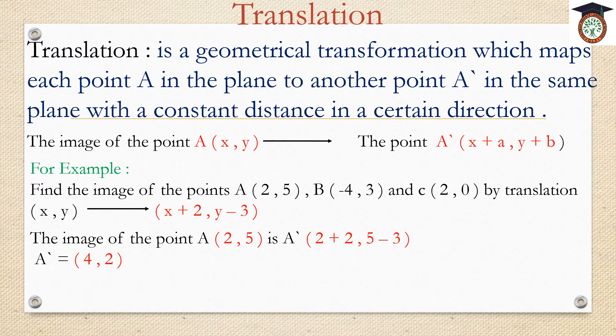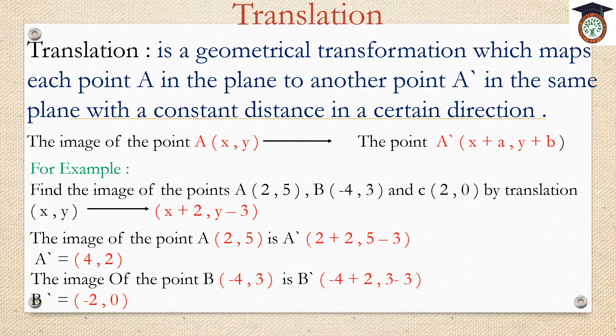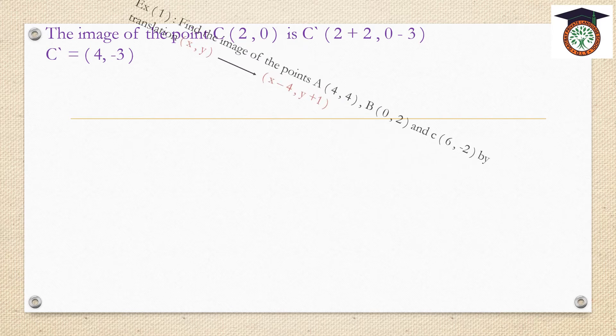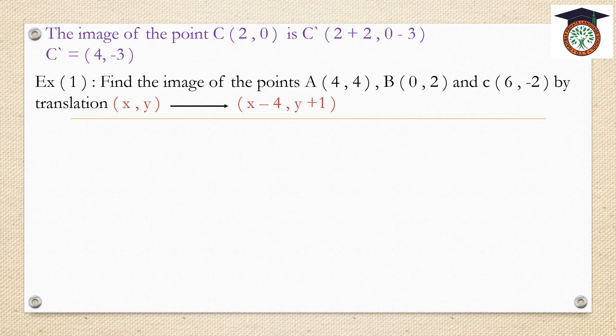A dash equals (4, 2). The image of point B is B dash: -4 plus 2 and 3 minus 3, which is (-2, 0). The image of point C(2, 0) is C dash: 2 plus 2 and 0 minus 3, which is (4, -3).